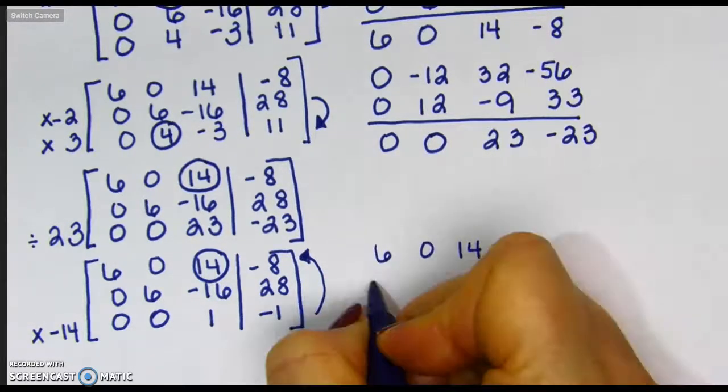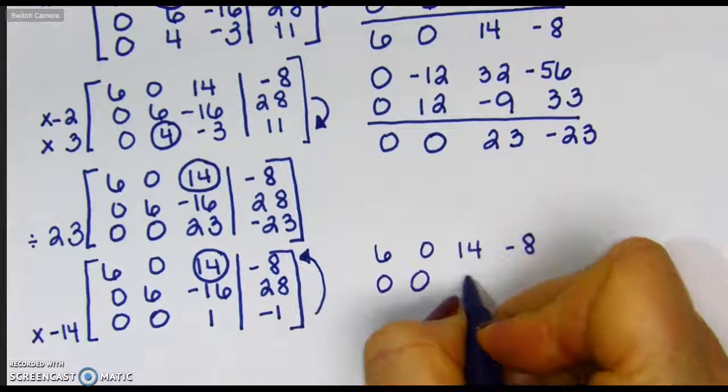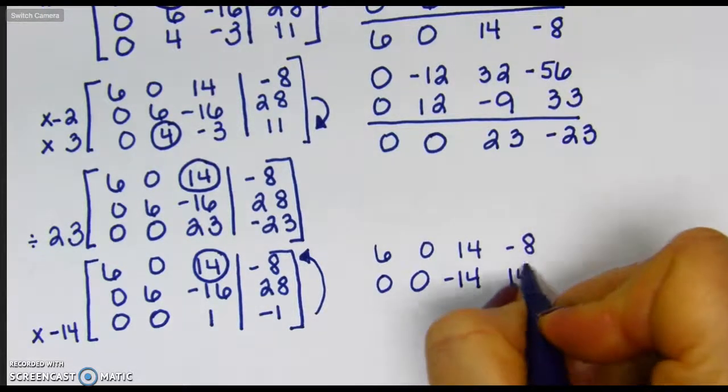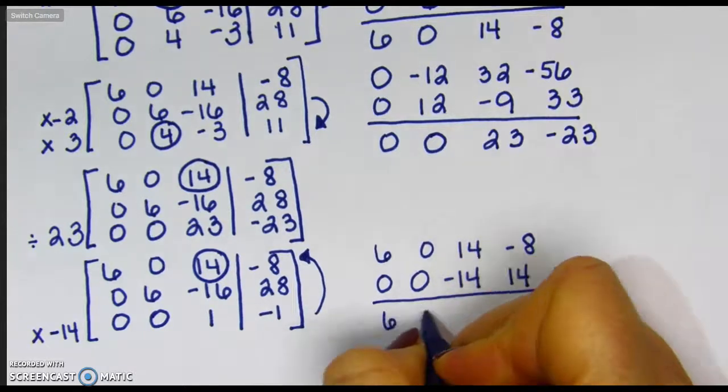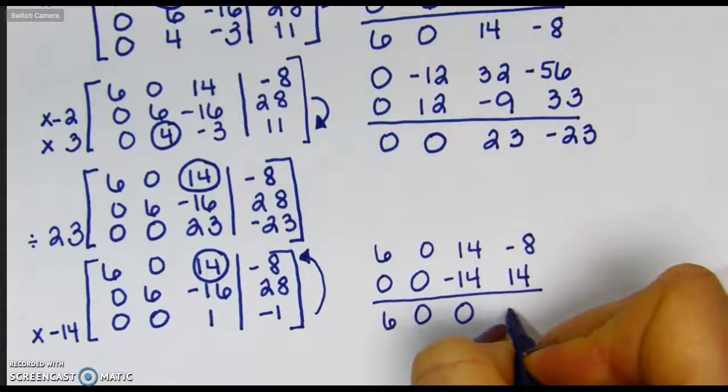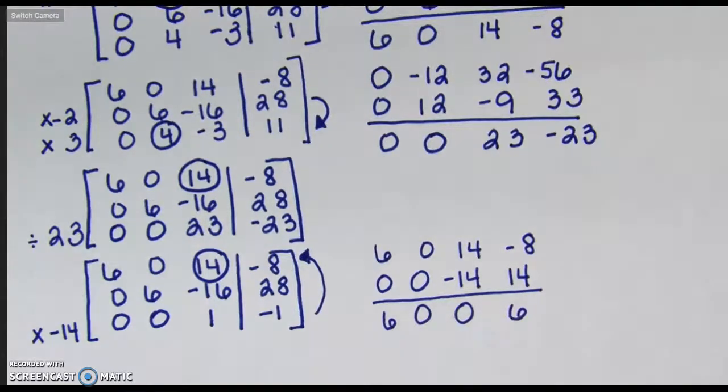Now I'll have 0, 0, negative 14, positive 14, giving me 6, 0, 0, 6. So my top row is now 6, 0, 0, 6.